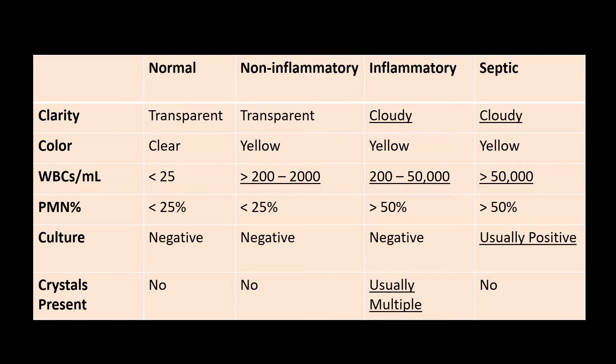There are two inflammatory arthritis presentations you need to distinguish: gout versus pseudogout. Gout will have monosodium urate crystals, the great toe is the most commonly affected joint, and imaging will often be negative. The treatment is NSAIDs, colchicine, and steroids. For chronic treatment, you can use allopurinol and probenecid.